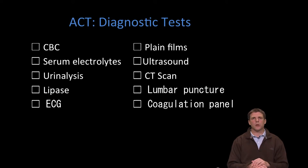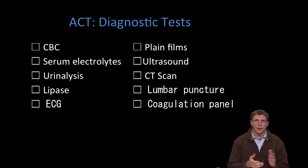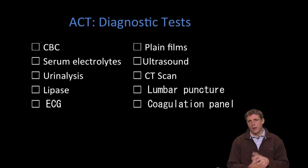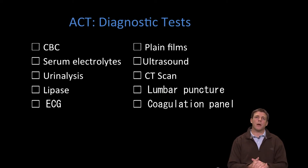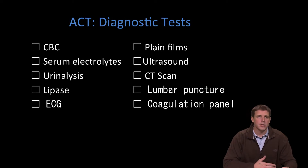Here is a list of potential diagnostic tests helpful in patients with focal neurologic findings: CBC (complete blood count), serum electrolytes, urinalysis, lipase (a pancreatic enzyme), electrocardiogram, plain x-rays of the chest or skull, ultrasound, CT scan, lumbar puncture or spinal tap, and a coagulation panel. These are all important considerations when working up patients with acute neurologic findings.